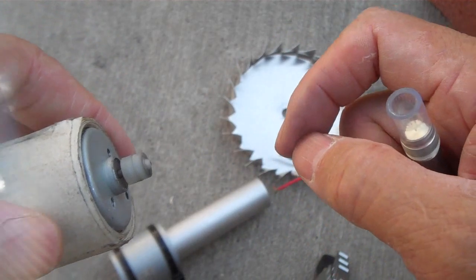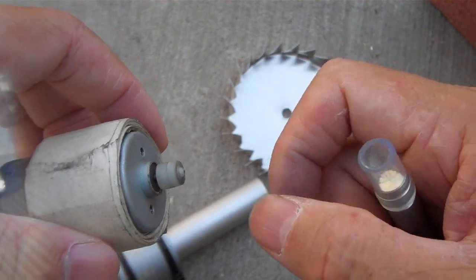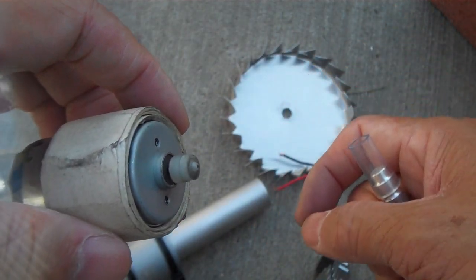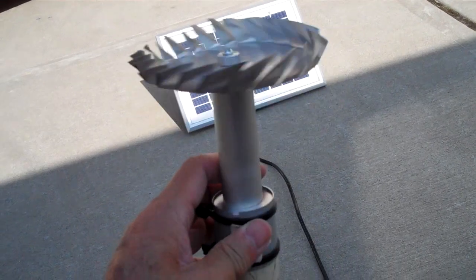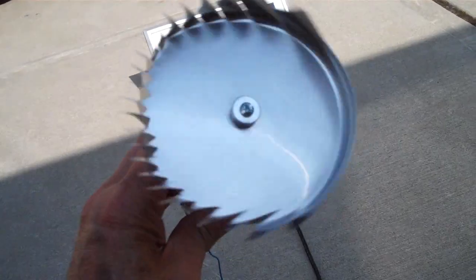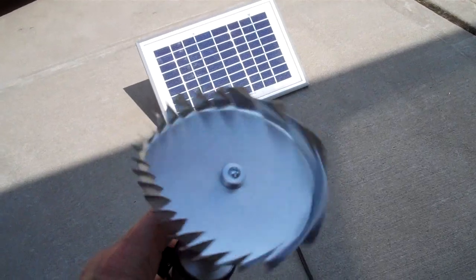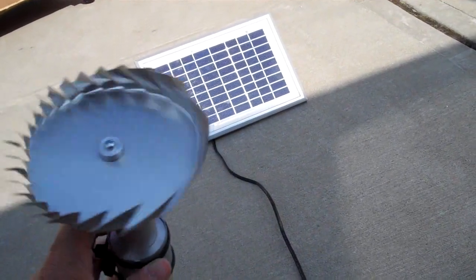Now you can see it's turning nicely. It's running on a 5 watt solar panel. I attached the aluminum fan and it seems to be working now with the 5 watt panel in the background there.